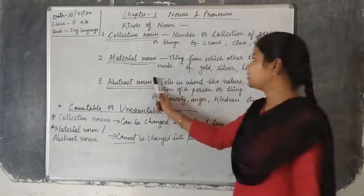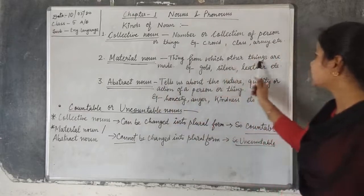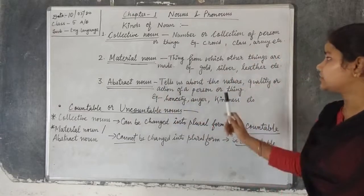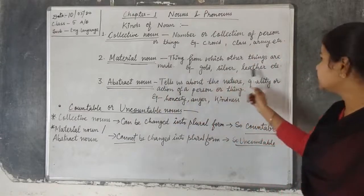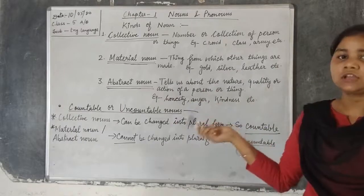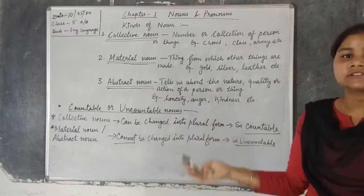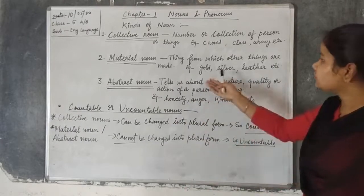The second one is material noun — things from which other things are made. Just like gold, silver, leather, etc. We can make gold earrings, necklace, anything from gold. So we can say that material noun refers to things from which other things can be made.